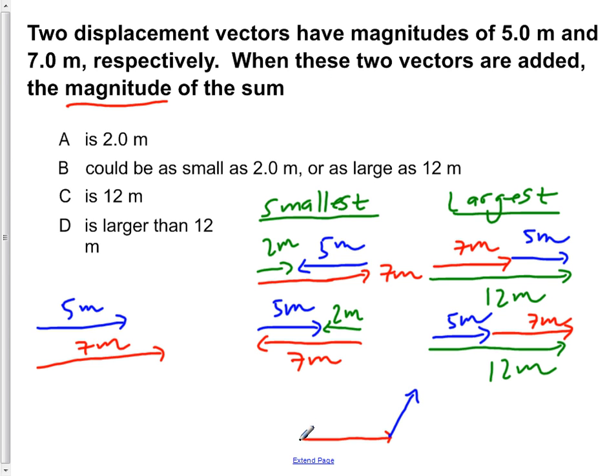Now, if we found the resultant value of that, this would in turn be less than 12 meters, but greater than the 2 meters, as you can clearly see here.